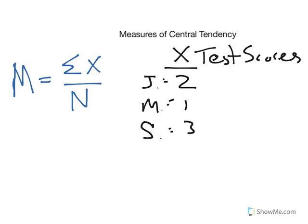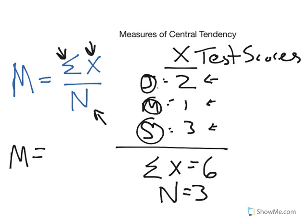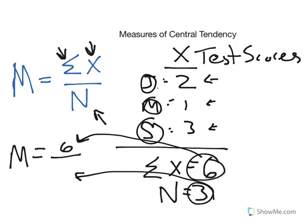So when we're trying to create the M, the mean, we need to sum all the X's. So each of these is an X: two, one, three. Each of these is an X. So we need to sum them up. Sum X: six. Two plus one is three, plus three is six. And then we need to find N, the population mean. So N is equal to one, two, three. N equals three. So then we just plug it in. The mean is equal to six divided by three, which gives us two. Pretty simple.